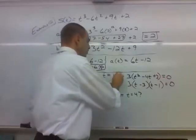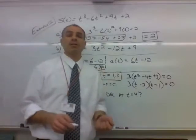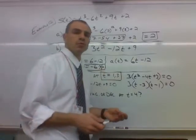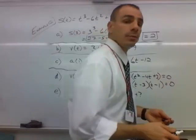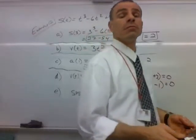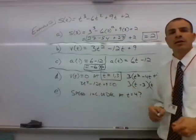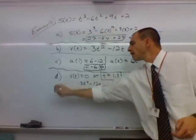Those are our two times when our velocity is at 0. So basically our object was moving and then it stopped and it began moving again and it stopped and it began moving again. And when it stopped, it was at the first second and the third second.